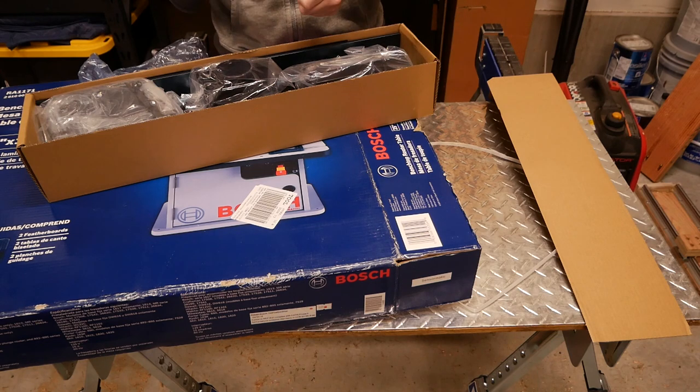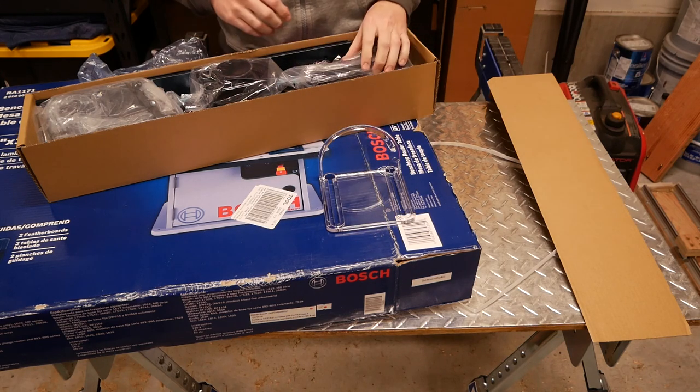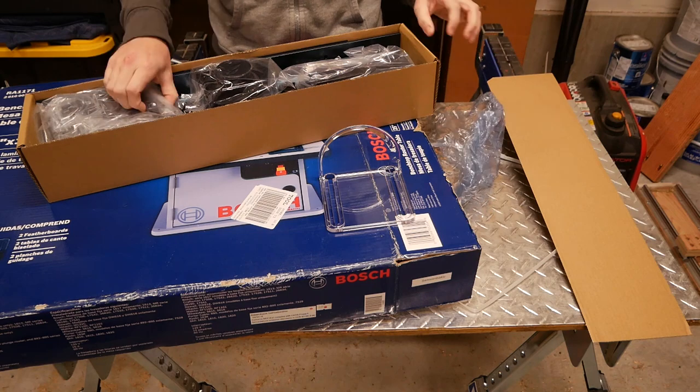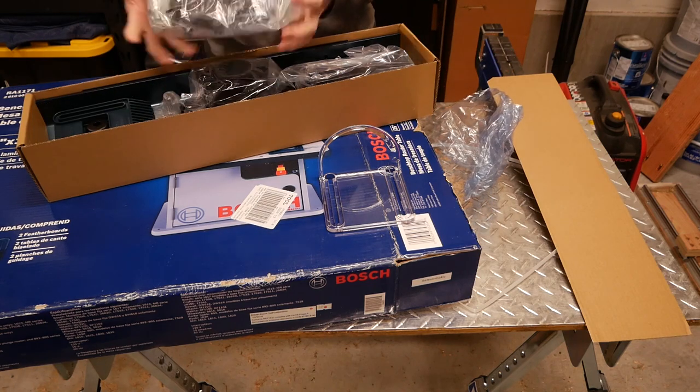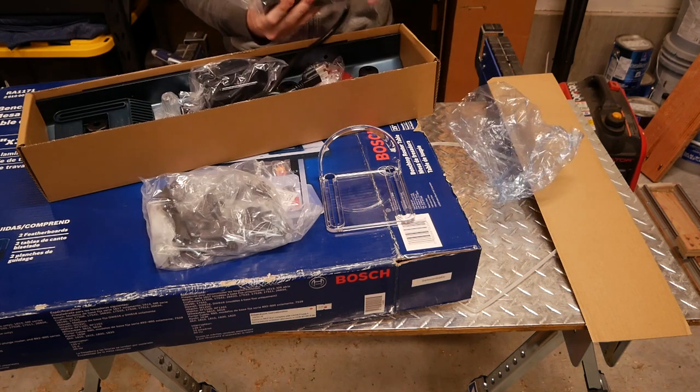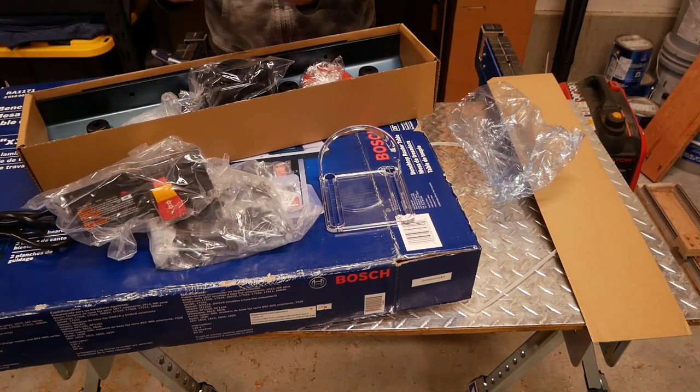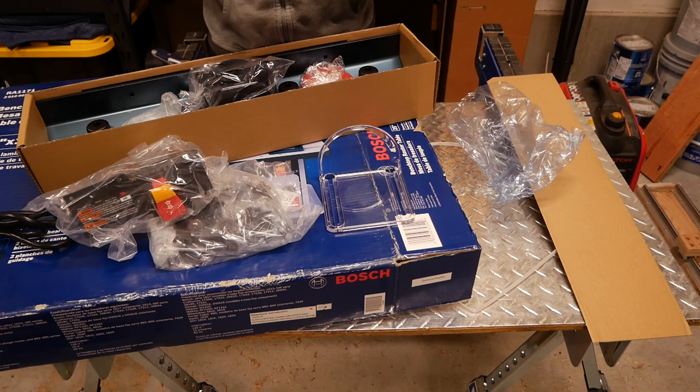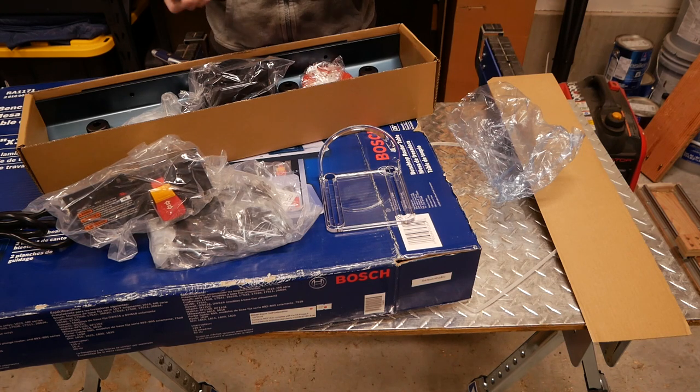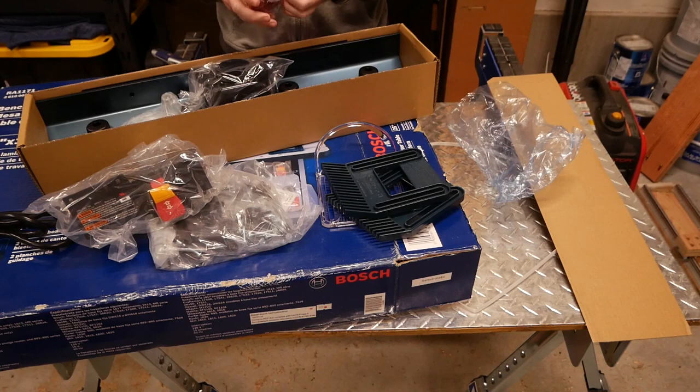First out of the womb is the bit guard followed by a bag of installation hardware. There appears to be a lot in there, so this assembly might end up being more involved than I had planned for. Next, we find the power switch assembly. In the box, it is located right next to the nicely included featherboards and tabletop inserts.